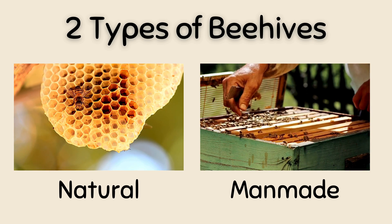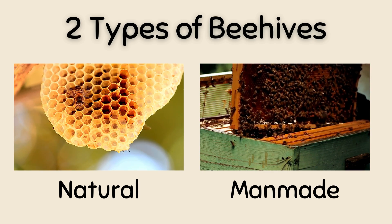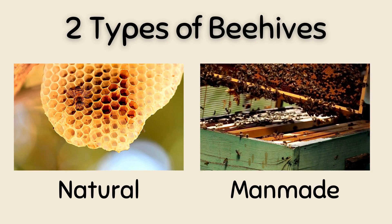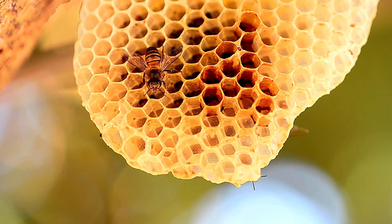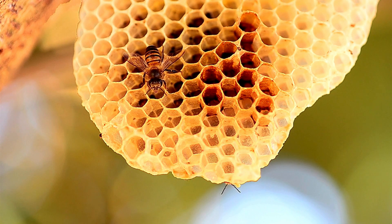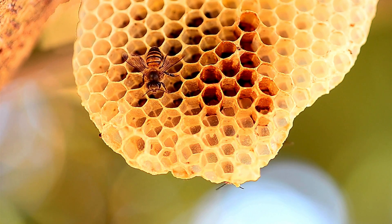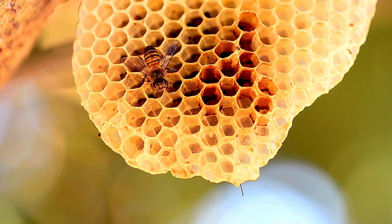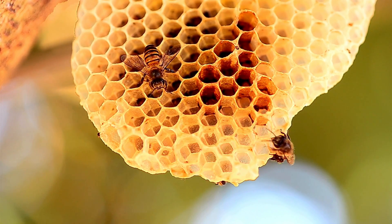Honey bees live in hives. There are two types of hives: natural and man-made. Natural hives are built by bees from natural materials found in the environment. Natural beehives are normally found in the wild, but sometimes bees build their hives in places around our houses or yards. Natural beehives can be different in structure depending on things such as the size and shape of the place they are built.